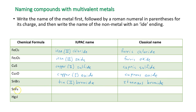For SnF₄: fluorine has a charge of negative 1, and there are 4 fluorines, so the tin needs a charge of positive 4. The IUPAC name is tin(IV) fluoride. In this case, using the classical system, a plus 4 charge is named stannic, so it would be stannic fluoride.